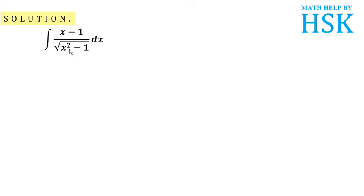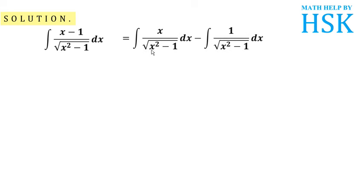The idea here is to divide the terms in the numerator — that is x and minus 1 — separately with the denominator. So dividing the terms in the numerator by the denominator, I get x upon under root of (x squared minus 1) minus 1 upon under root of (x squared minus 1). This first part can be evaluated by substitution and the second can be integrated using a direct formula, making the problem easier by converting it into two separate integrals.